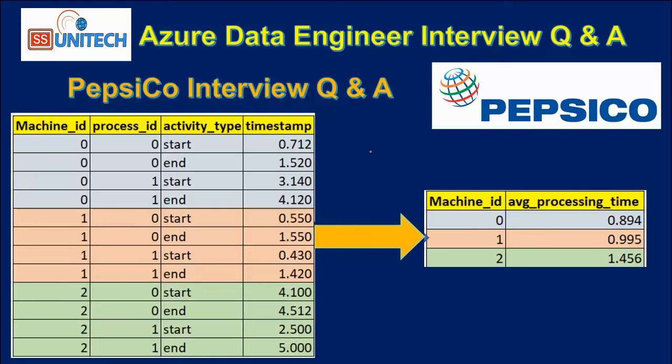Let's assume we have an input dataframe with four columns: machine ID, process ID, activity type, and timestamp. In the output we want only two columns — machine ID and the average processing time.